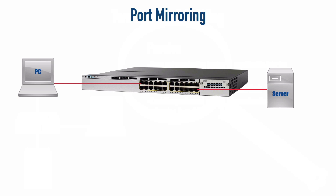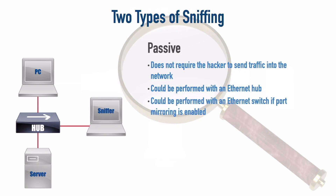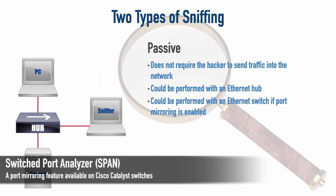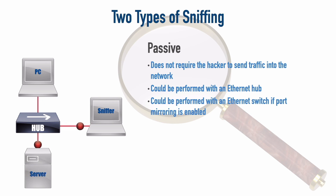With port mirroring, we attach our sniffer to a port on the Ethernet switch and instruct it to monitor all traffic on the port to which the PC is attached. When the server sends traffic to the PC, those packets also get sent to our sniffer — that's another form of passive sniffing. On Cisco Catalyst switches, which is what we're using, this feature is called SPAN — Switch Port Analyzer — which performs port mirroring. Later in this module, we'll look at active sniffing techniques as well.